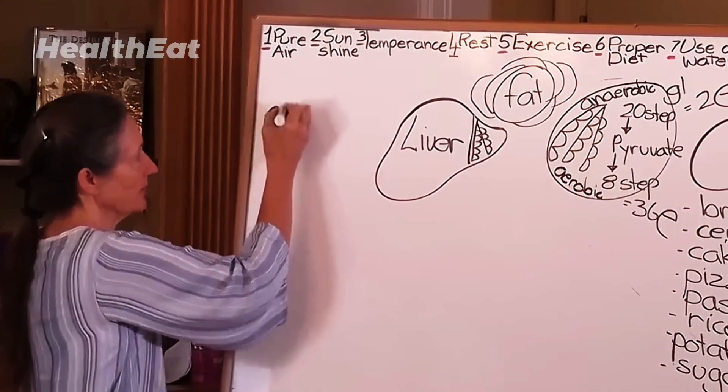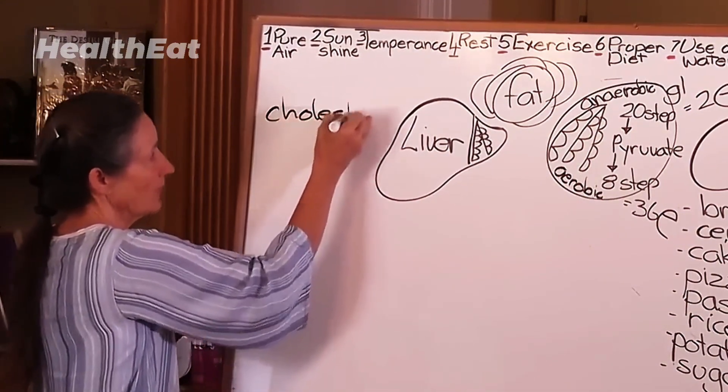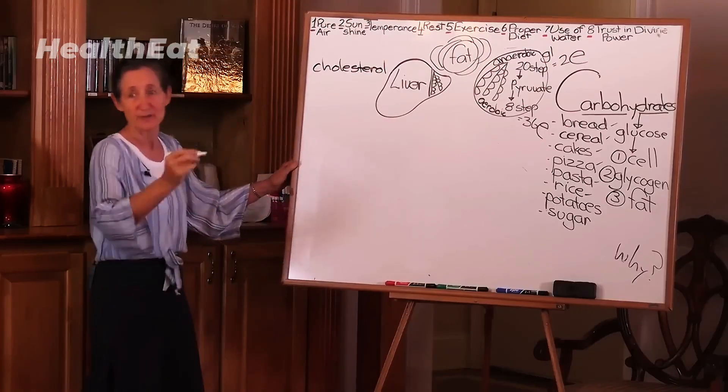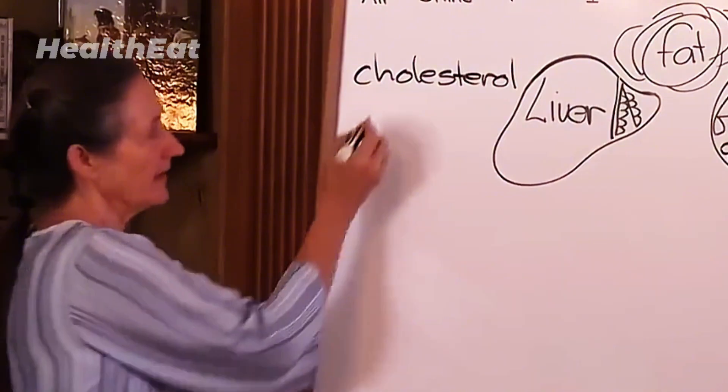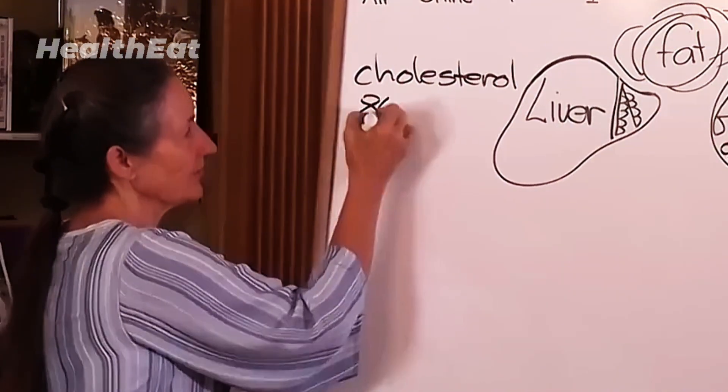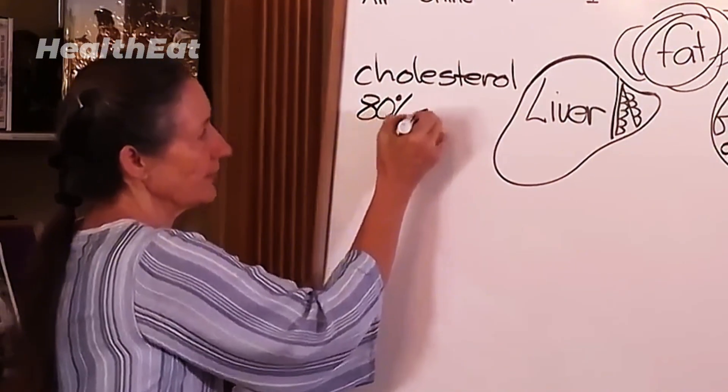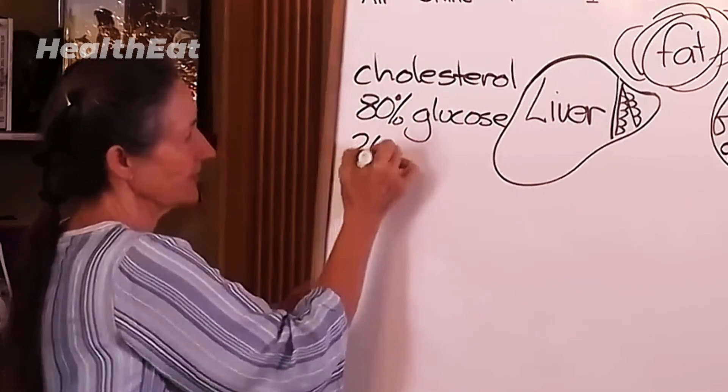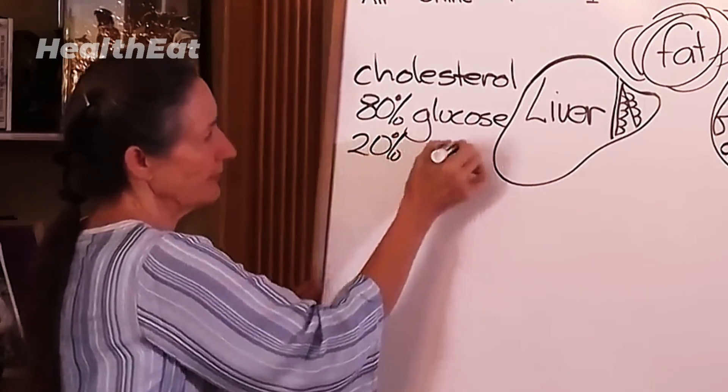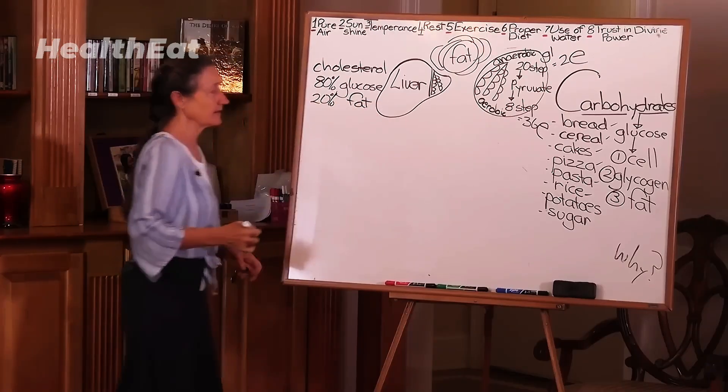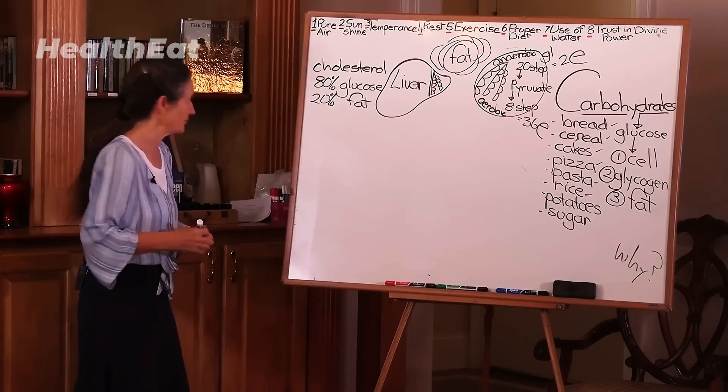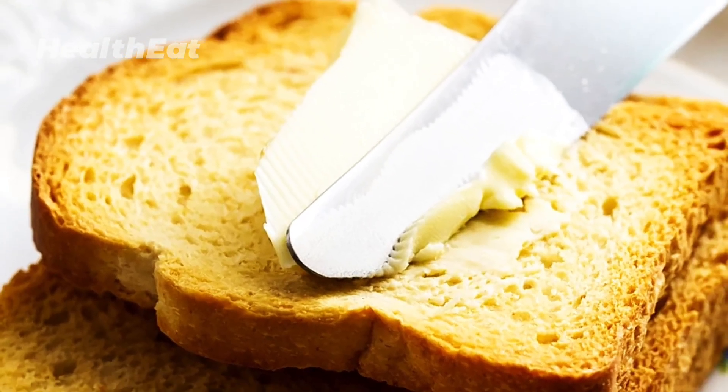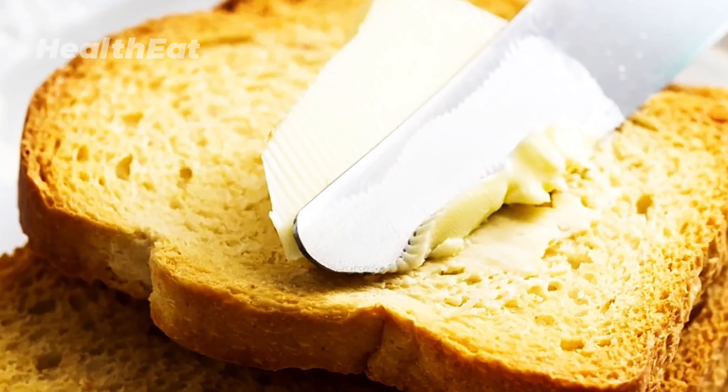It's a good time to look at it because the liver makes cholesterol according to the demand our body puts on it. And 80% of the cholesterol that the liver makes is made from glucose, and 20% is made from fat. Now this information tells us straight away it's not the butter on the bread, it's the bread under the butter that's the problem, and that's what Atkins found.